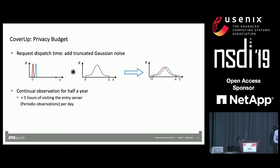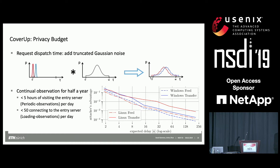We assumed continual observations for half a year, with five hours spent on the entry server (Reddit) — the periodic observations — and 50 visits to the entry server for the loading measurements. On the x-axis you see the average delay added to each request, corresponding to the width of the noise. On the y-axis is the attacker's advantage, where zero means active and passive participants are completely indistinguishable and one means fully distinguishable. Our results show that with 60 seconds of added delay — note both axes are on a log scale — we get an attacker's advantage of one out of 1,000.